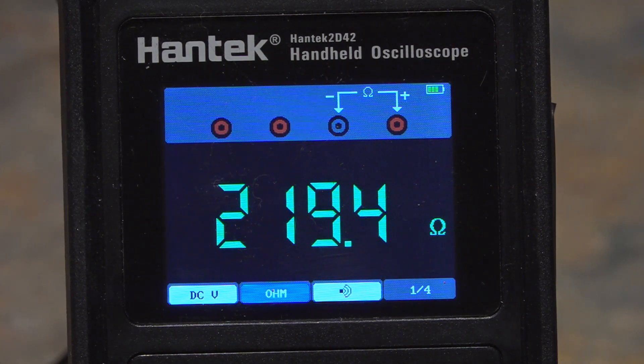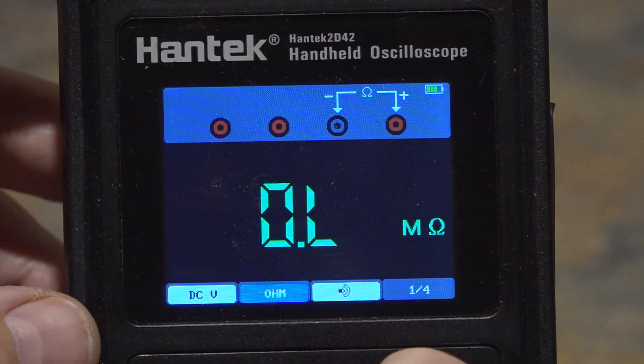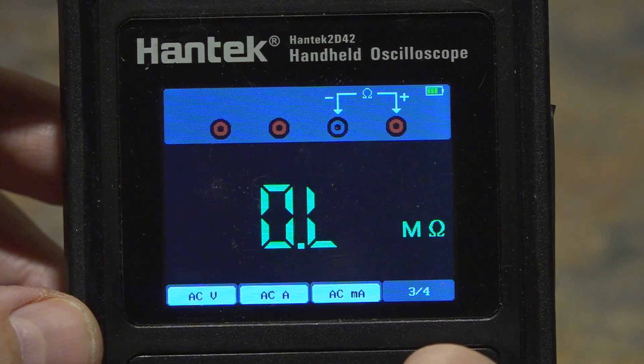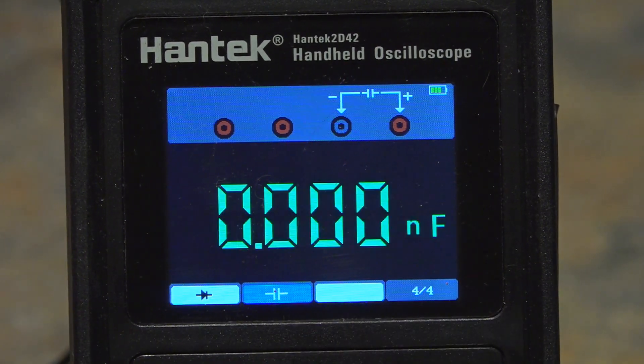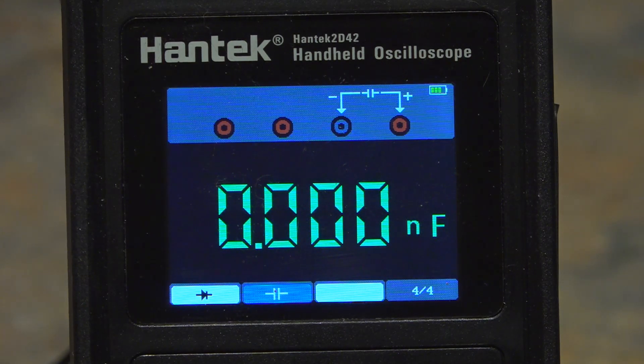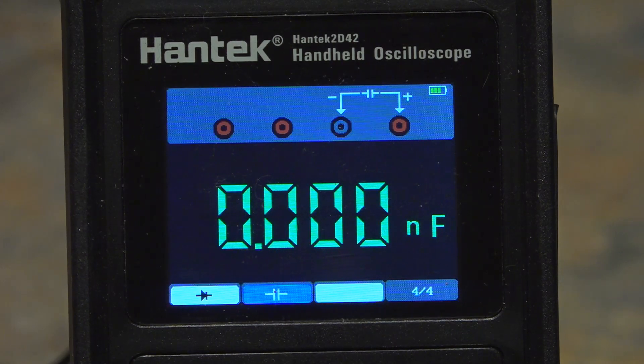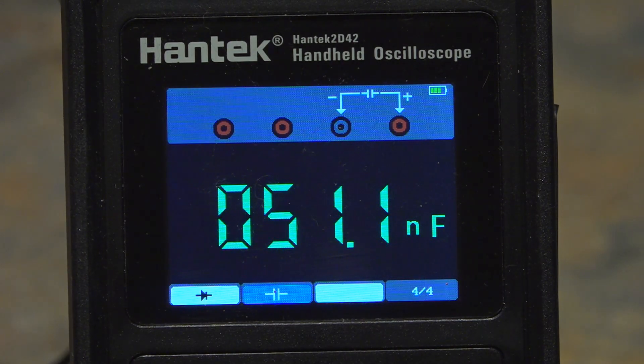Now this is interesting. Let's switch over to capacitance. The capacitor that I picked from my kit was supposed to be one of the 10 nanofarad capacitors, but when I actually measured them, they're not 10 nanofarad, they're 50 nanofarad.